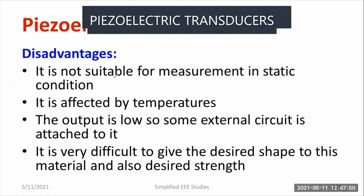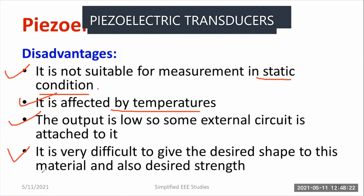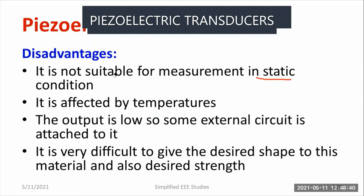What are the major drawbacks of piezoelectric transducer? It is not suitable for measurement of static conditions — only suitable for measurement in dynamic conditions. Temperature effects change the reading. The output is low, so an external circuit is attached for amplification. The output generated from the piezoelectric transducer is very small, and to extract the signal, we require a special type of amplifier that is expensive. Maintenance of that amplifier auxiliary circuit is quite expensive. It is very difficult to give the desired shape and desired strength to the material, and deformation matters a lot in the case of piezoelectric transducer — everything is somewhat complex. These are the few things you have to remember regarding the pros and cons of the piezoelectric transducer.